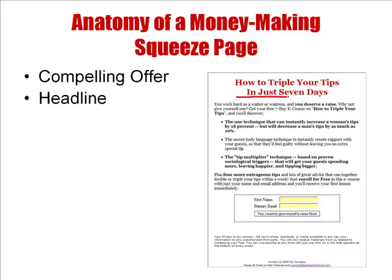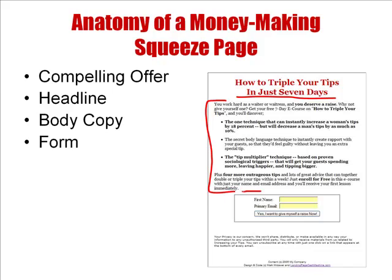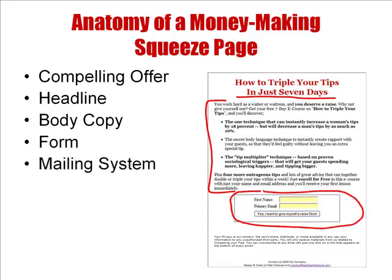At the top here, we have a headline. In this case it says, 'How to Triple Your Tips in Just Seven Days.' This is actually for a squeeze page for waiters and waitresses to learn how to improve their tips. There's body copy, and there's the form — this is where somebody enters their name and email address. This form is connected to a mailing system, also called an autoresponder system.